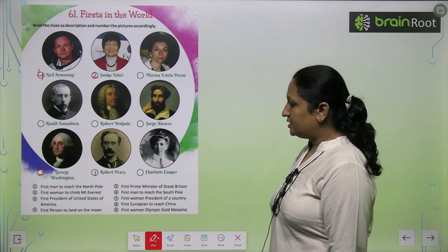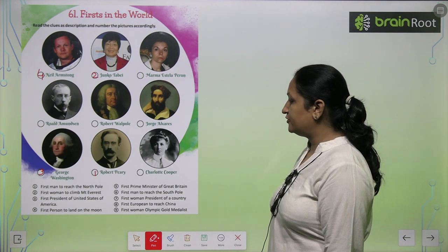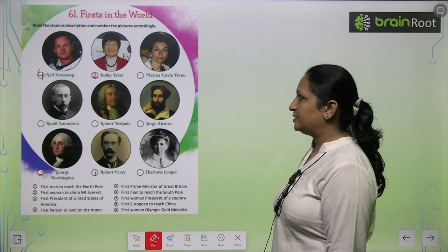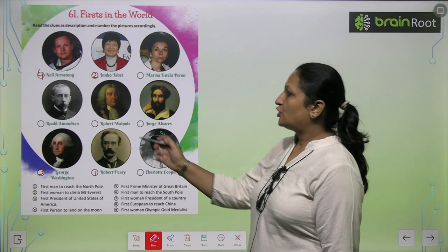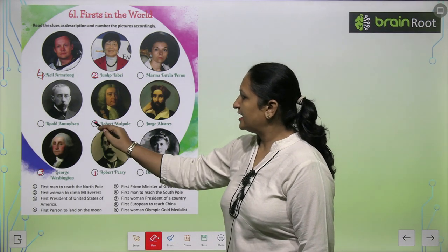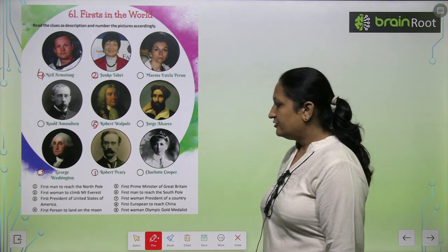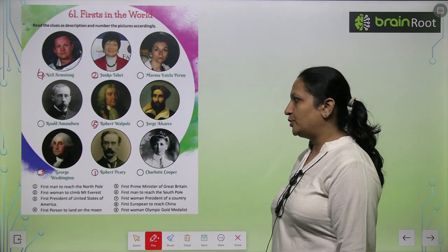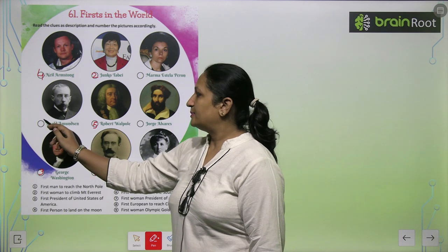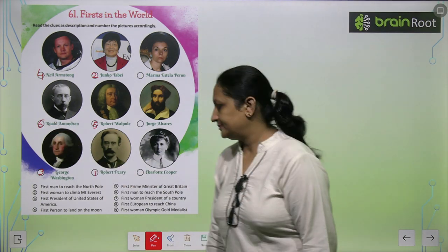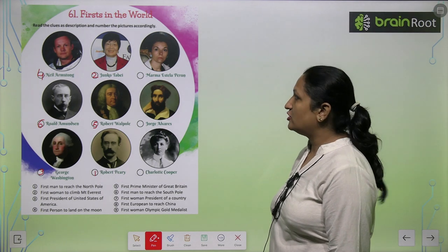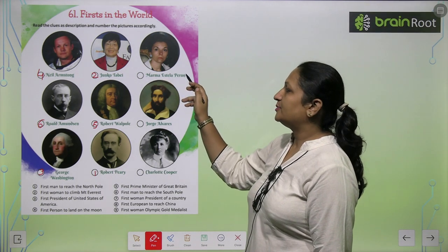See the fifth one, children. First Prime Minister of Great Britain — kaun thay first Prime Minister of Great Britain? He was Robert Walpole. Is liye aap yaha number 5 likhenge. First man to reach the South Pole — he was Roald Amundsen. So aap yaha pe number 6 likhenge.